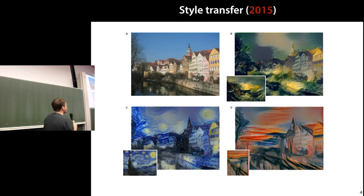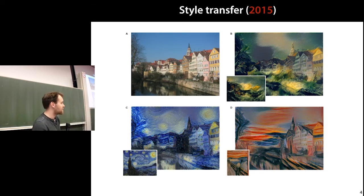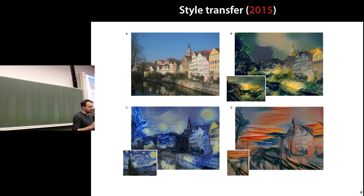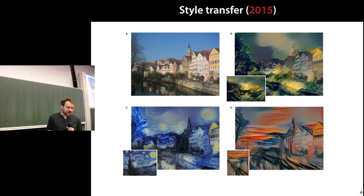Moving to 2015, this is also a nice system: style transfer. Given a photograph and a painting — this is a Turner painting — give me this photograph painted in the style of this painting. This is actually done without learning per se; it's built on a machine learning model for images. The authors figured out a way to use that model to do style transfer, extracting the kind of knowledge the model has learned and using it creatively.